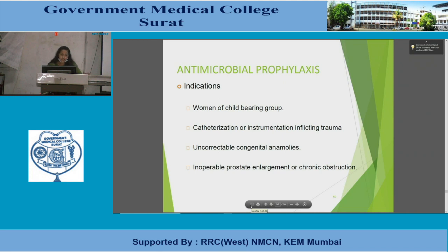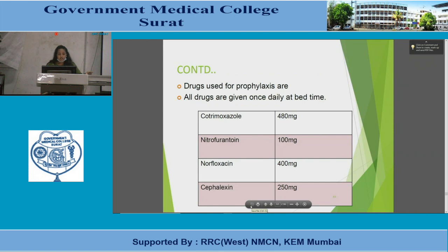Indications for antimicrobial prophylaxis related to UTI include women of childbearing age, catheterization or instrumentation inflicting trauma, uncorrectable congenital anomalies, inoperable prostatic enlargement, or chronic obstruction. Prophylactic drugs are given once daily at bedtime and include cotrimoxazole 480 mg, nitrofurantoin, norfloxacin, and cefalexin.